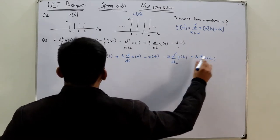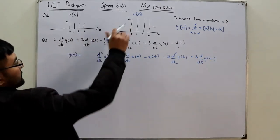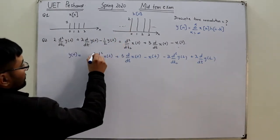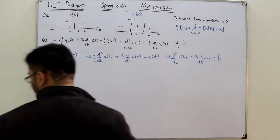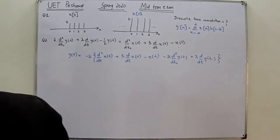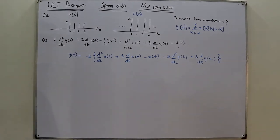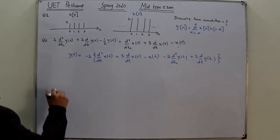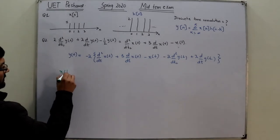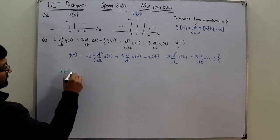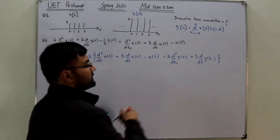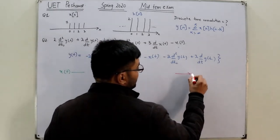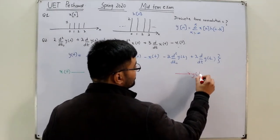This whole is multiplied with a negative two. Now you draw the system. I told you to take x of t on one side and y of t on the other side, and in between these two you place your block diagram elements.